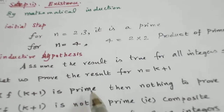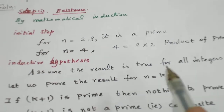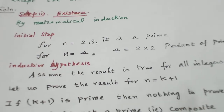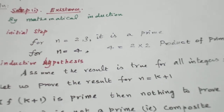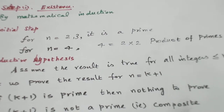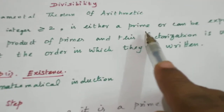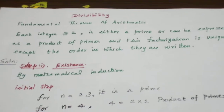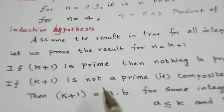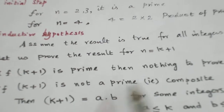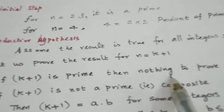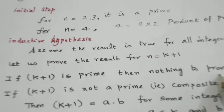Suppose k + 1 is a prime number, then we are done — we have nothing to prove, since the statement itself says it is a prime number. If it is not a prime number, it can be written as a product of primes.